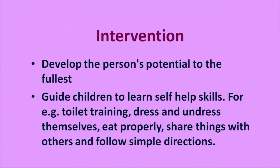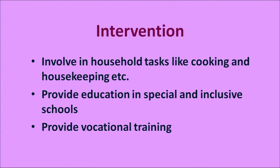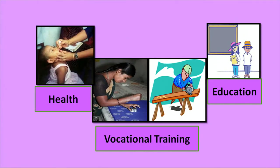Self-help skills include toilet training, dressing and undressing themselves, eating properly, sharing things with others, and following simple directions. Other interventions include involving them in simple household tasks like cooking and housekeeping according to their abilities. Keeping up with guidance, counseling, and monitoring is also important. Provide education in special and inclusive schools, and provide vocational training in whatever they are interested in and can do — examples include block printing and carpentry. Healthcare and education are very, very important.